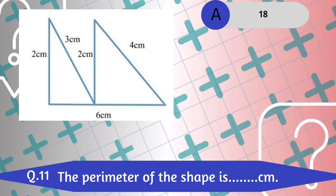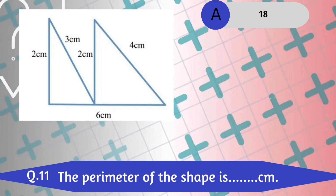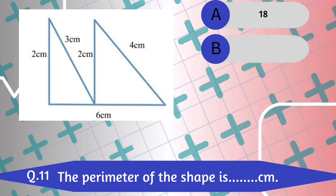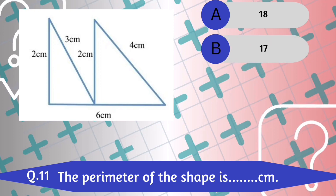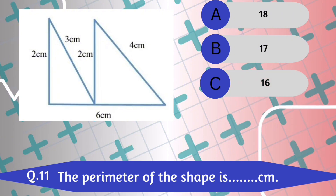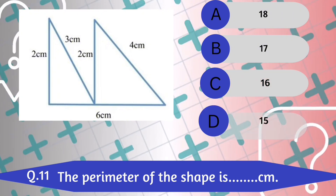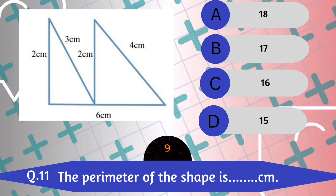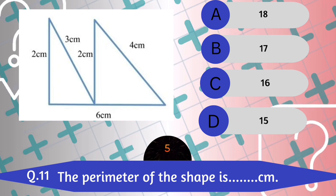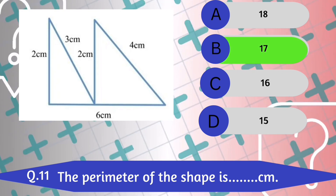Question number 11. The perimeter of the shape is dash cm. A. 18 centimeters. B. 17 centimeters. C. 16 centimeters. D. 15 centimeters. 17 centimeters is the correct answer.